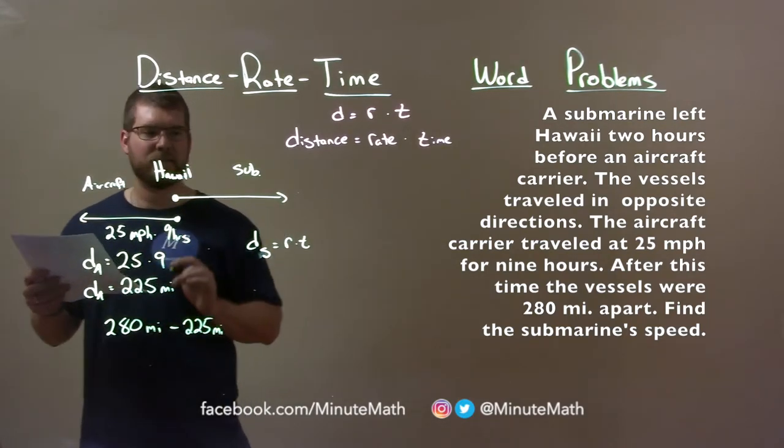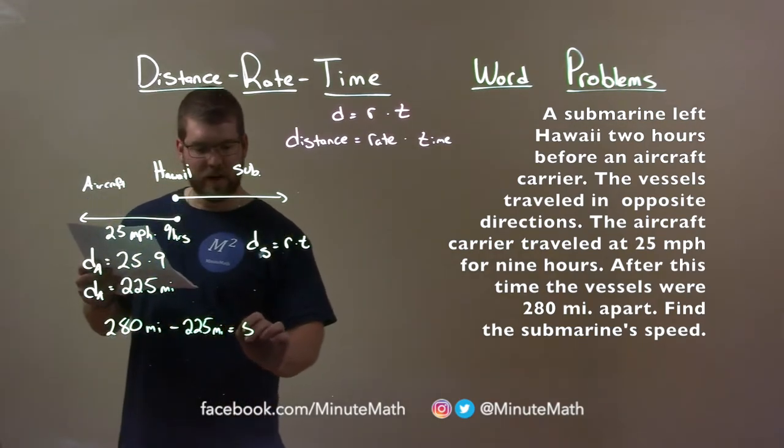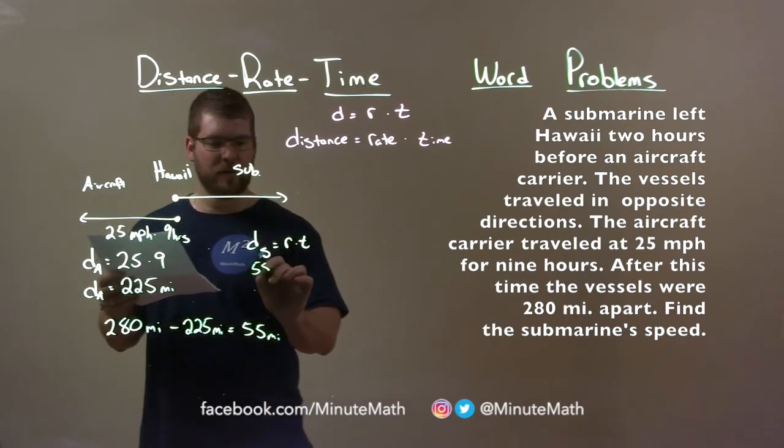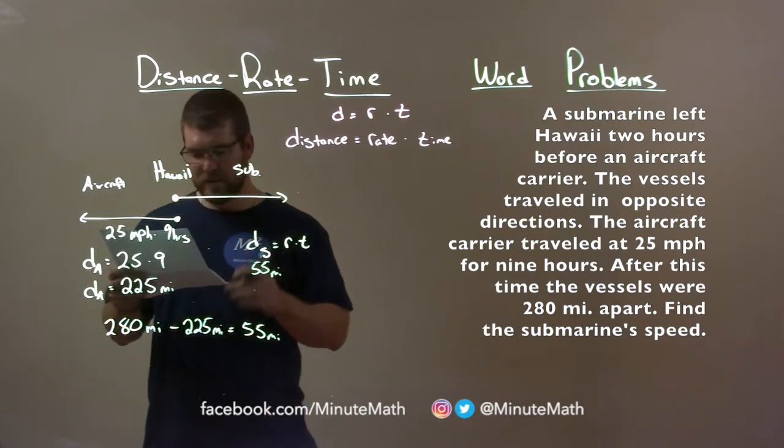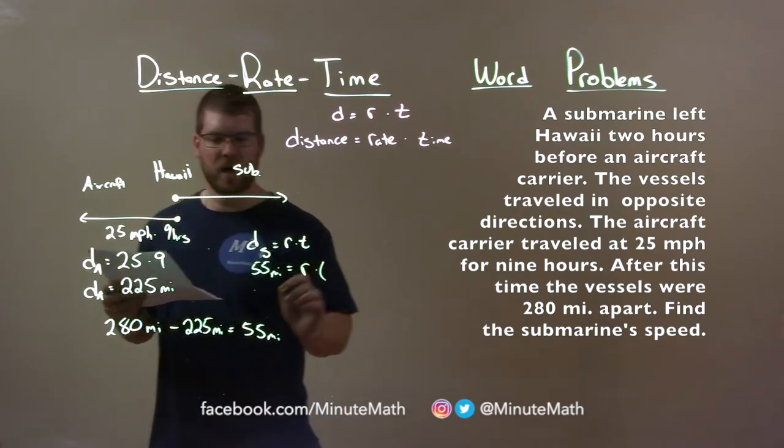And that should equal the distance the submarine had traveled, which is 55 miles. So we can continue that here. 55 miles is the distance the submarine traveled, and that's equal to our rate times our time.